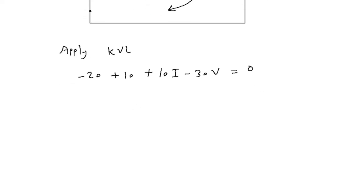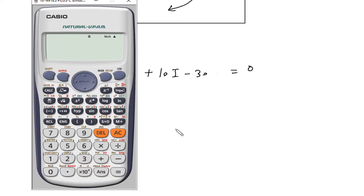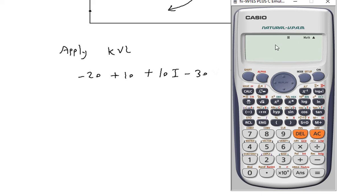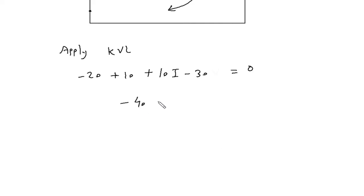So this will be minus 20 plus 10 minus 30 minus 40 plus 10I is equal to 0. So 10I is equal to 40. Therefore, I is equal to 40 by 10 or 4 ampere. I is equal to 4 ampere.